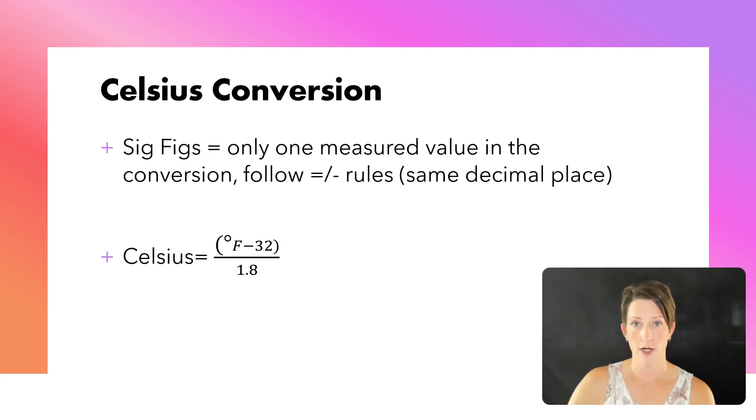Going between Celsius and Fahrenheit. I'm going to show you both, but my suggestion is memorize one of them because you can always rearrange the equation to find the other. For sig figs for Celsius, again, only one measured value is in this conversion, and this is going to be the degrees Fahrenheit. The 32 and the 1.8, which is also that 9 fifths that we talked about before, those are exact values. We will follow the addition-subtraction rules of decimal place for temperature just to make our processes easier going back and forth, and so it's consistent across the line.